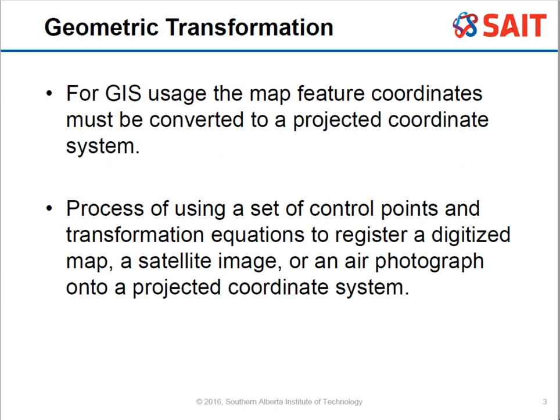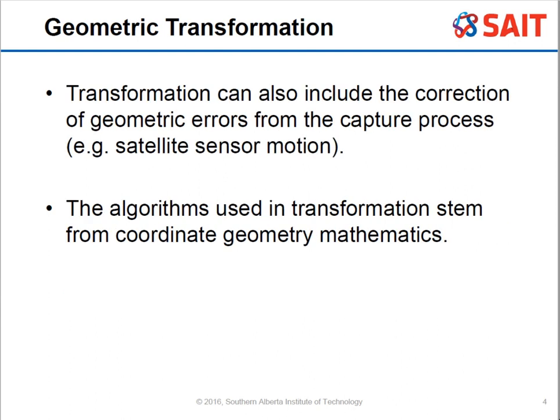To make this work, we use ground control points — sometimes just called control points — and a transformation equation. This allows us to take any digitized map, satellite image, or aerial photo that doesn't have a coordinate system and force it into a coordinate system using those two things.